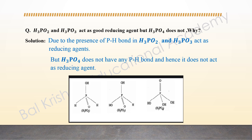As seen in the image: hypophosphorous acid H₃PO₂ has two P-H bonds. Orthophosphorous acid has only one P-H bond and two P-OH bonds. In orthophosphoric acid, all P-H bonds are replaced by P-OH bonds — there are three P-OH bonds — and due to this, orthophosphoric acid does not act as a good reducing agent, whereas hypophosphorous and orthophosphorous acids do, due to their P-H bonds.